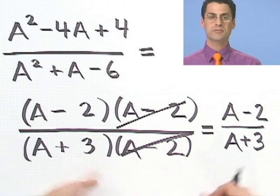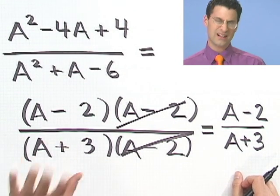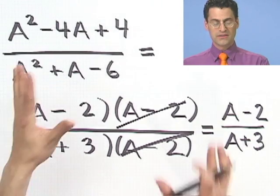As long as A doesn't equal 2, you're fine. And let's face it, if you pick a number at random, how often do you get 2? Well, I don't know, maybe we'll get 2. Anyway, that's it for simplifying. Not a big deal. Factor top, factor bottom, cancel away. Your worries are over.